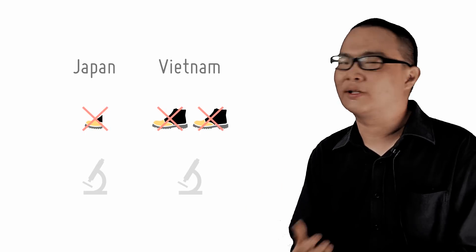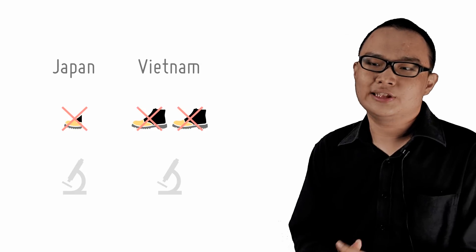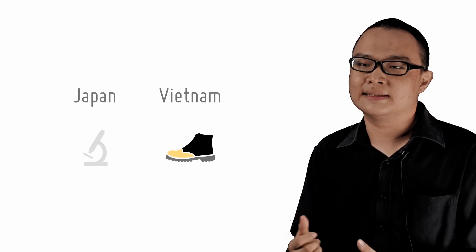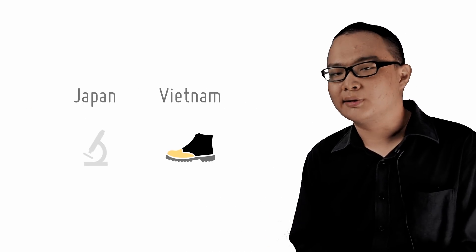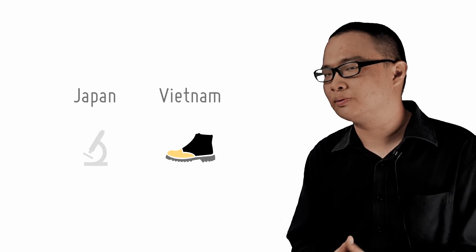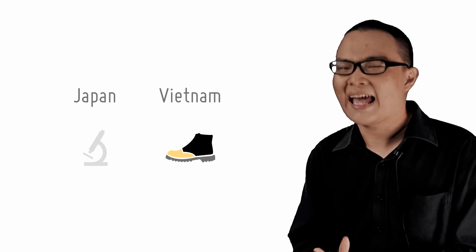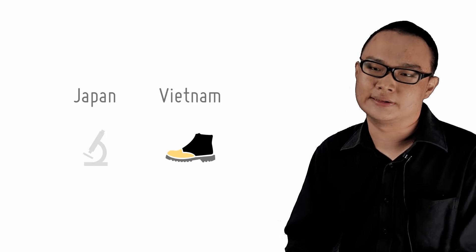Now let's introduce some trade into our model. Due to trade, Japan specializes in microscopes while Vietnam specializes in shoes. Because this is comparative and not absolute advantage, we cannot consider complete specialization.